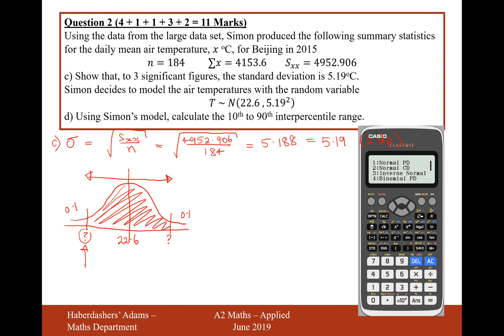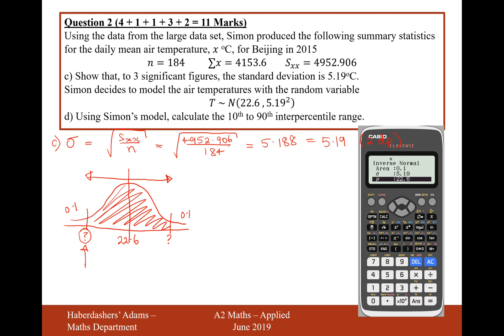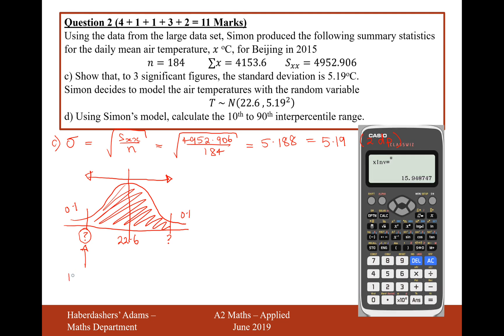In this mode we want to hit the inverse normal mode so mode number 3 in your calculator. This will tell us a point, this will tell us a temperature value such that the probability of the temperature being less than that temperature value is 0.1. Let me show you how we use mode 3. So select mode 3 and we want an area to the left of 0.1 when the standard deviation is 5.19 and the mean is 22.6. So type that in and you get an answer of 15.94.